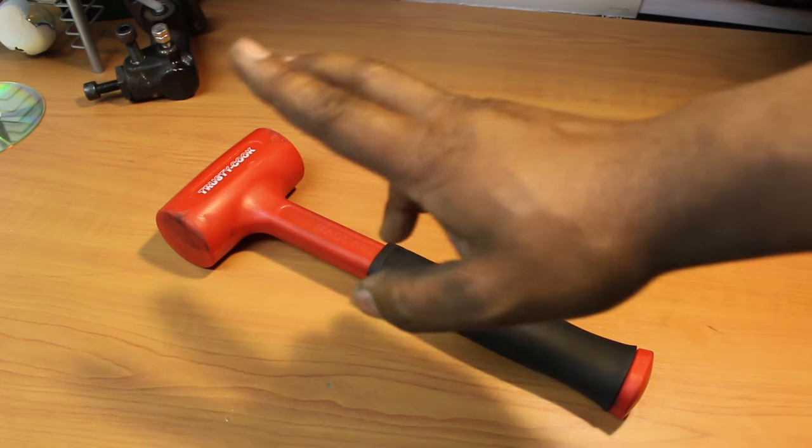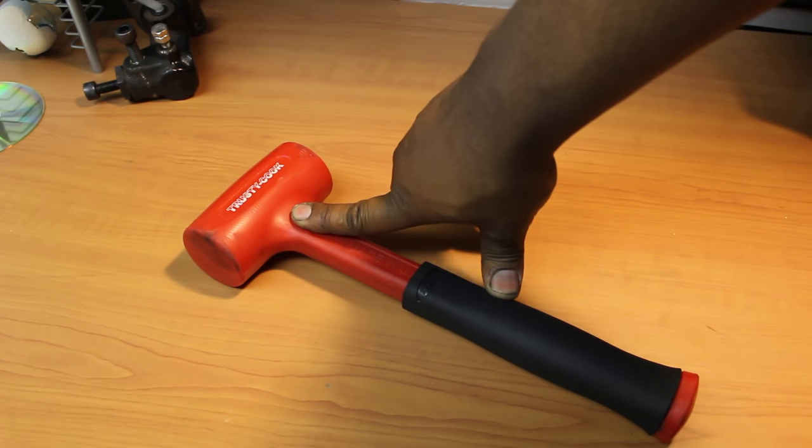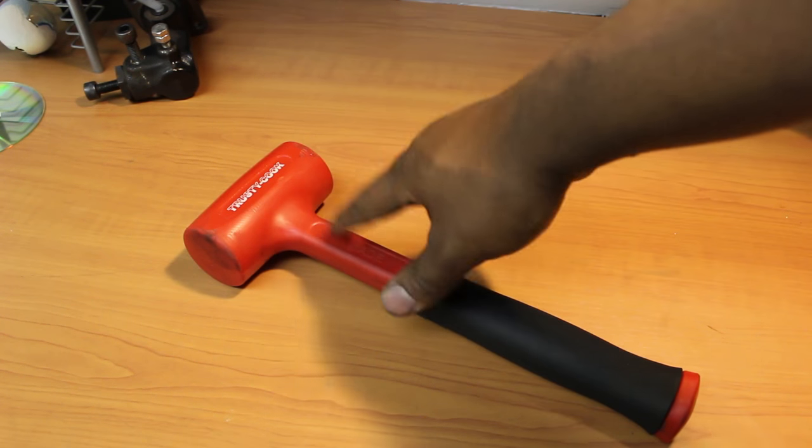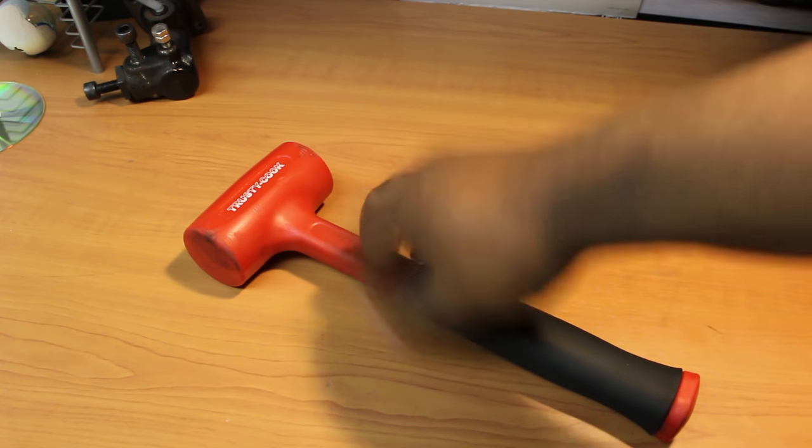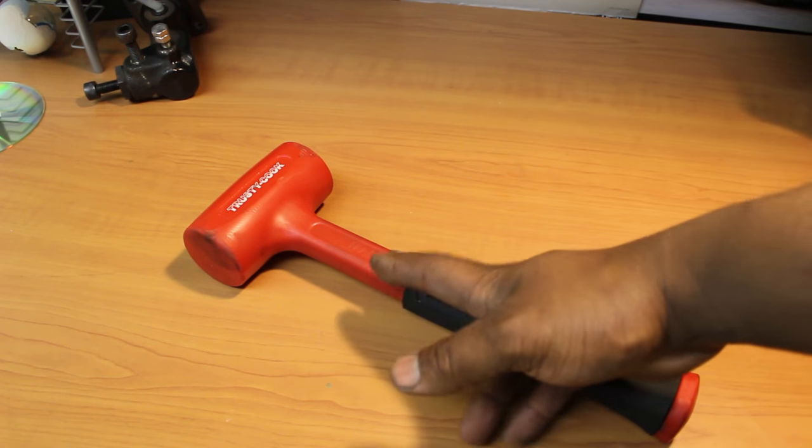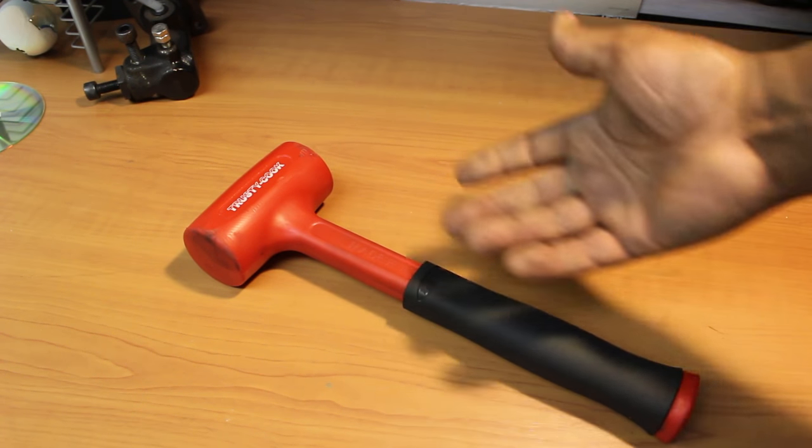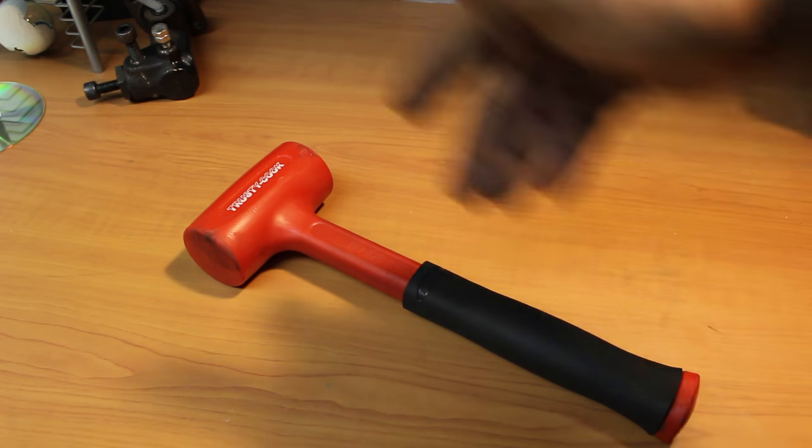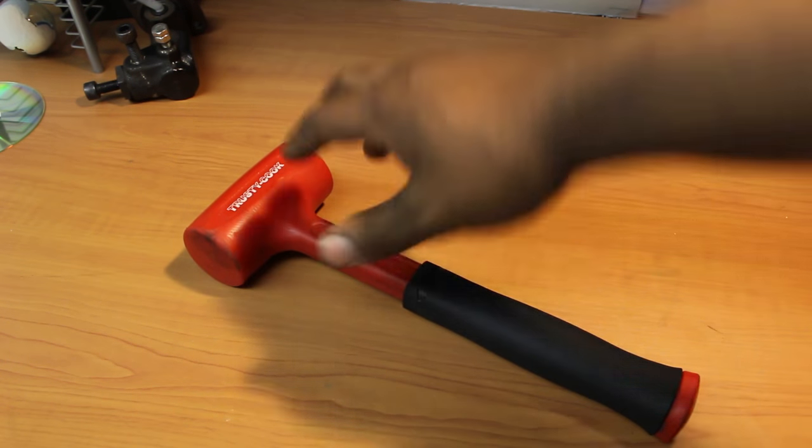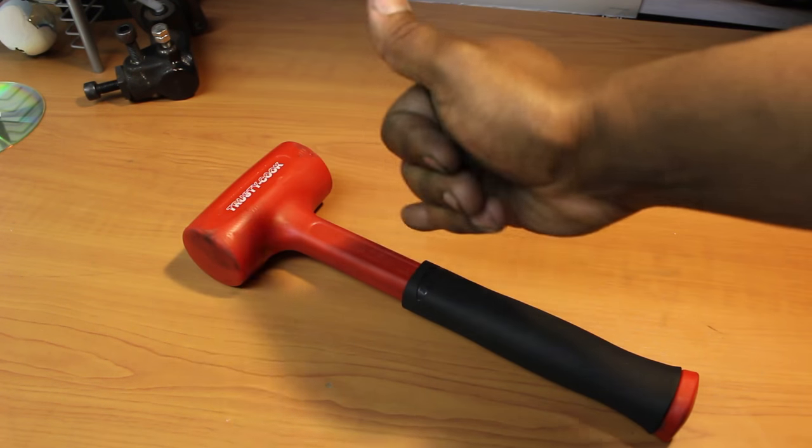But trusty cook's a great company. I have verified for myself that the Cornwell dead blow ball peens are actually the same thing as the trusty cooks. There's one other one I've seen, I think the matco ones. Yeah. I think I've seen the matco ones as well in person and they are exactly the same. So trusty cook makes hammers for all six of those brands and the trusty cooks definitely going to be cheaper.